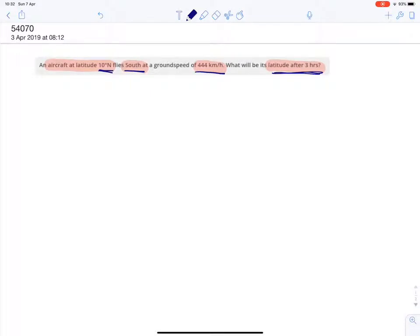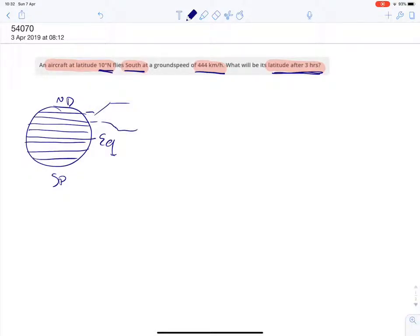Two things that we primarily need to know about in navigation to be able to calculate this. That is first that we have the equator here and we have the north pole, south pole. We need to know that the distance between each latitude, the one degree of d lat, is 60 nm.